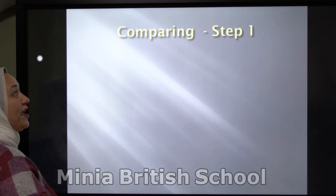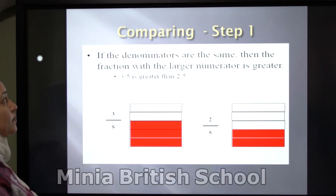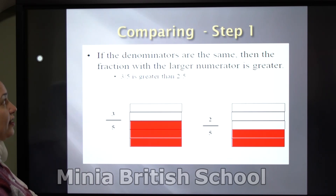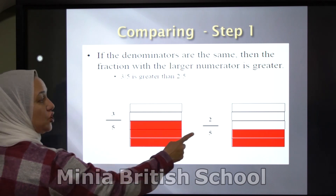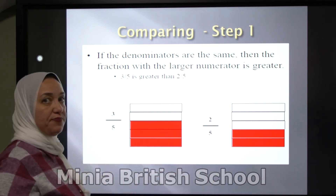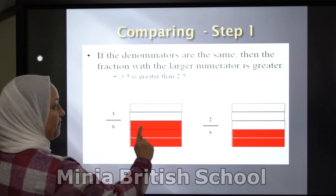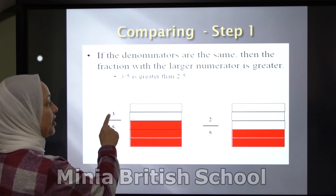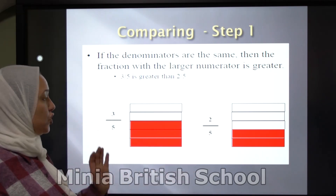To compare between fractions, you make two steps. Step number 1: if the denominators are the same, then the fraction with the larger numerator is the greater one. You have 3 over 5 and 2 over 5 — which one is bigger? The denominators are the same: 5 here and 5 here. Look at the numerators: 3 and 2. Which one is bigger? Yes, 3 is bigger than 2.